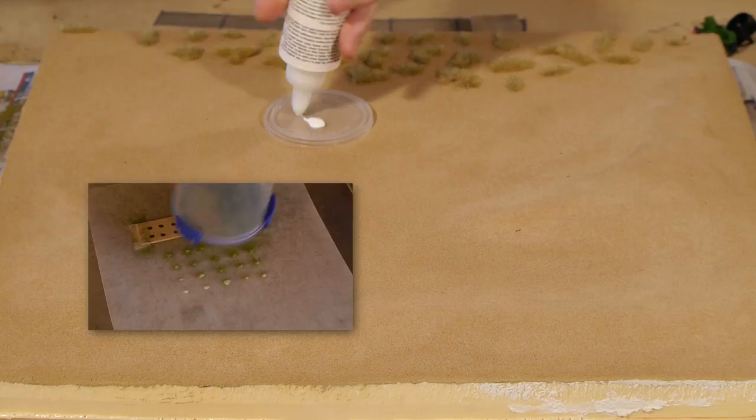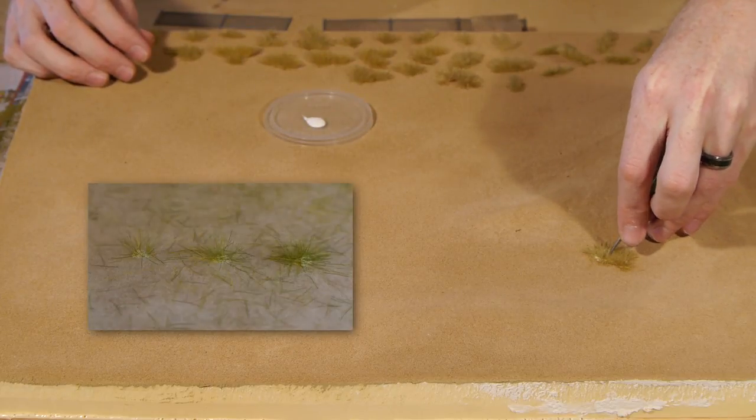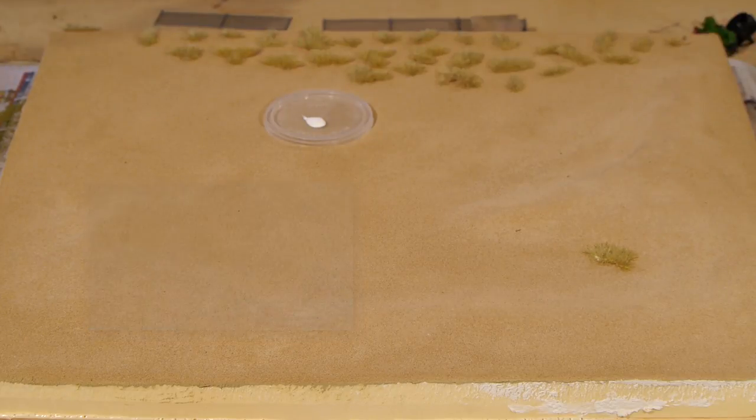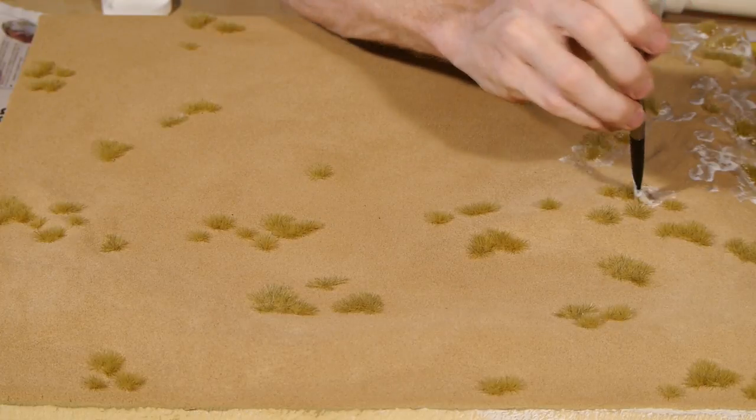These six millimetre homemade static grass tufts do a good job and I further blend them into the diorama by randomly applying two millimetre static grass around them.